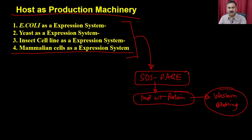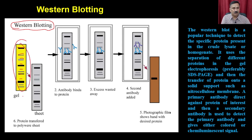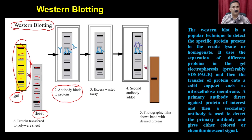Western blotting is a multiple-step reaction. First, you run the SDS-PAGE and get the pattern of bands on the gel. You then transfer those bands onto a nitrocellulose membrane, maintaining the band pattern. Then you treat it with a primary antibody, which binds to your target protein. After a washing step to remove non-specifically bound proteins, you add secondary antibodies that bind to the primary antibody. Finally, you add a substrate that gives you the signal.